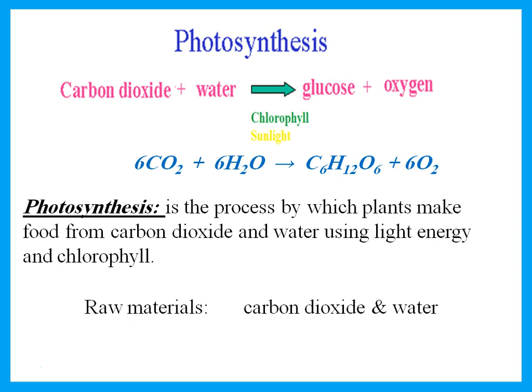What are the raw materials for photosynthesis? Raw materials means the things we need to make photosynthesis — that is carbon dioxide and water. What are the products of photosynthesis? Products means what was made by photosynthesis, which is glucose and oxygen.